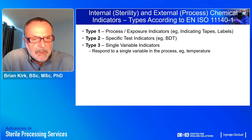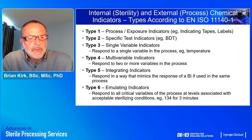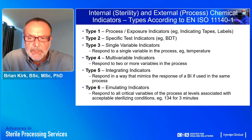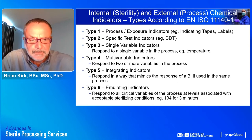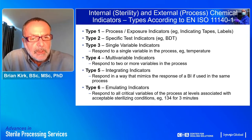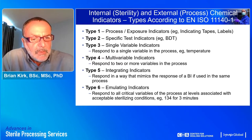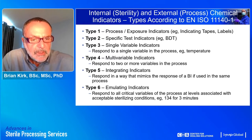There are three further categories — types 4, 5, and 6 — categorized according to performance specification. Multiple variable indicators (type 4) respond to two or more variables in the process. Integrating indicators (type 5) respond in a way that mimics the response of a biological indicator. Emulating indicators (type 6) are designed to monitor and give a pass or fail response to a very specific combination of exposure conditions.